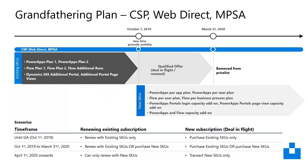Regarding grandfathering: for Power Apps Plan 1, Plan 2, Flow Plan 1, Plan 2, and Dynamics 365 additional portals and additional portal page views, you will be able to continue purchasing these until the 31st of March 2020. You have the choice to purchase new or existing SKUs on renewal. If your renewal is after the 1st of April 2020, you'll have to renew into the new SKUs. If it's before that date, you will be able to renew into the existing SKUs, so it's worth checking which option works better for you or your customer.